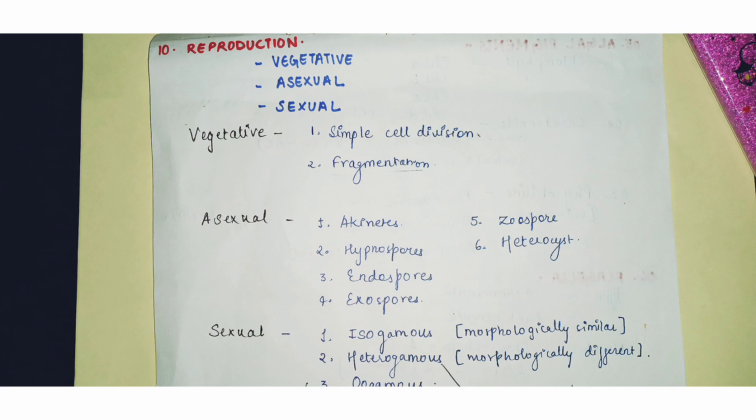The asexual form of reproduction is also very important — algae produce different types of spores. Six types of spores are produced in algae, and their names have been mentioned here without going into full detail at this stage.